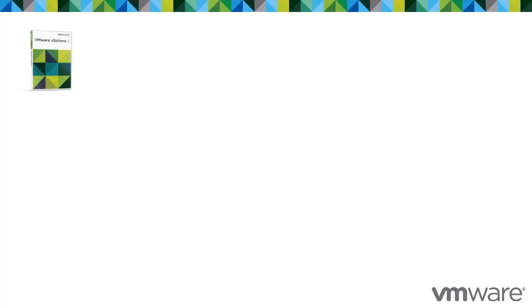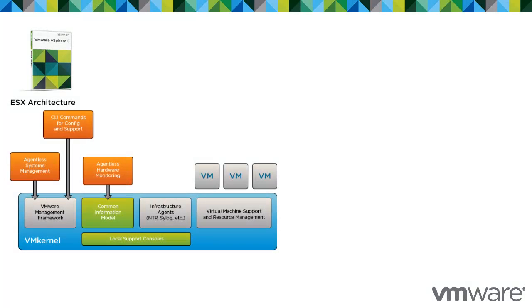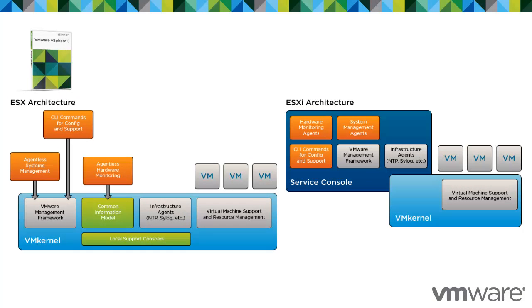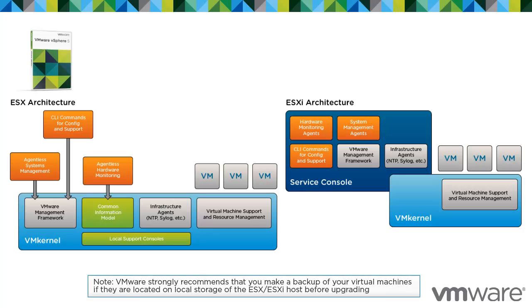With the introduction of vSphere 5.0, ESX has been discontinued. ESXi is now the only version available for data center server virtualization. Due to the architectural changes from ESX to ESXi, not all configuration files, settings, and third-party tools are guaranteed to be migrated to ESXi 5.0. Ensure that you retain and note any configuration modifications before performing an upgrade. For more information, see the vSphere upgrade guide.